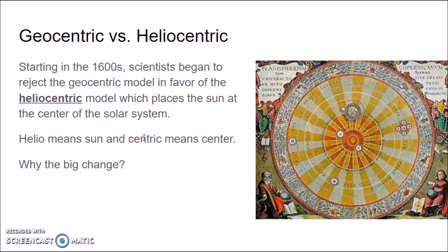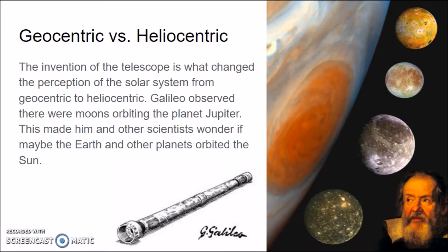The invention of the telescope is what changed the perception of the solar system from geocentric to heliocentric. Galileo, a scientist in Italy in the 1600s, observed with his telescope that there were moons orbiting the planet Jupiter. You can do this too — if you use a telescope and look at Jupiter, you can see some of its moons around it. This made Galileo and other scientists wonder if the Earth and other planets orbited the Sun, like those moons orbiting Jupiter.